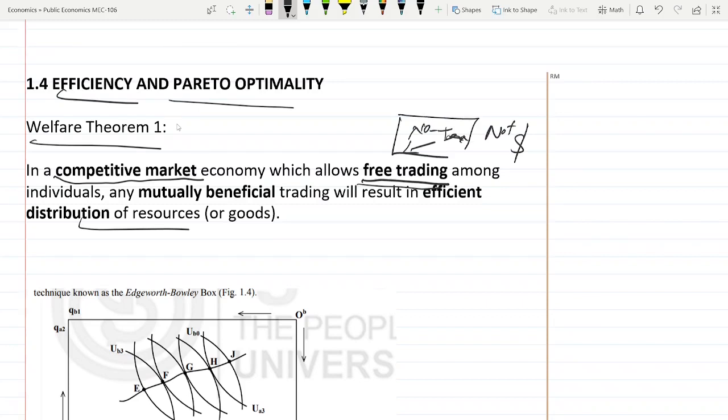Mutually beneficial means that the trade should not have any case of asymmetric information. It's not like one party has more information compared to the other and this will cause one party to lose his welfare. There should be no case of asymmetric information. Both parties should have equal information regarding the trade. In that case, result will be an efficient distribution of resources automatically. The economy will automatically distribute the resources in an efficient manner if these all conditions are satisfied: competitive market, free trading, and mutually beneficial.